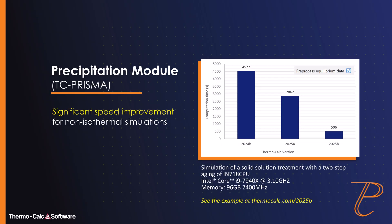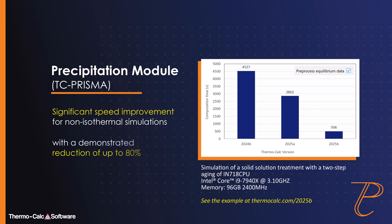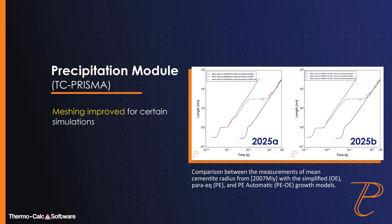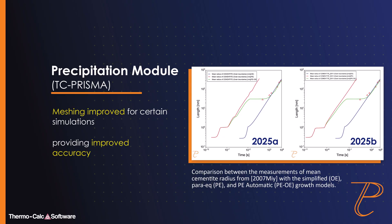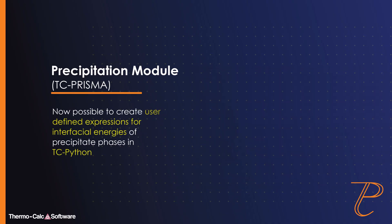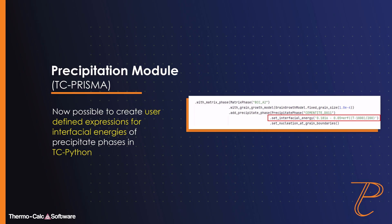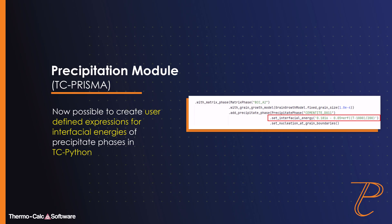The precipitation module TC-PRISMA receives a significant speed improvement for non-isothermal simulations, with a demonstrated reduction of up to 80%. Meshing is also improved in the module for certain simulations, providing improved accuracy. It is now possible to create user-defined expressions for interfacial energies of precipitate phases in TC-Python with the precipitation module.